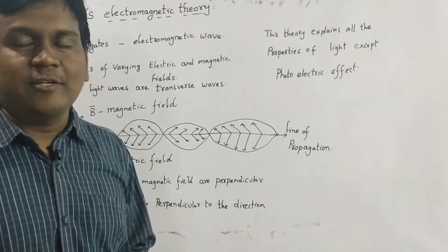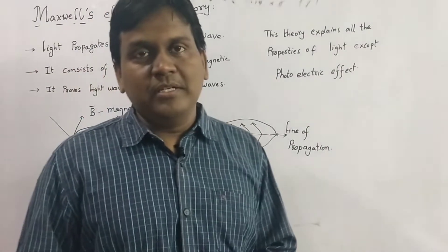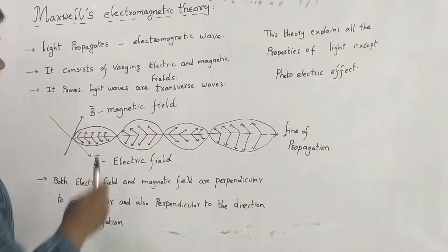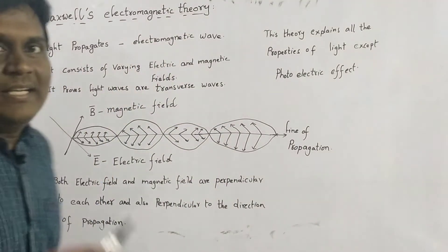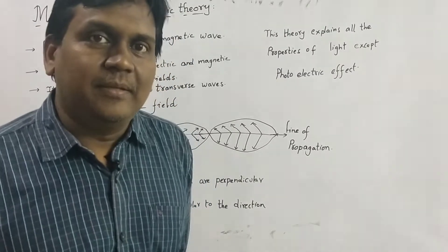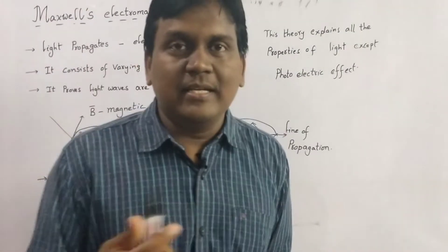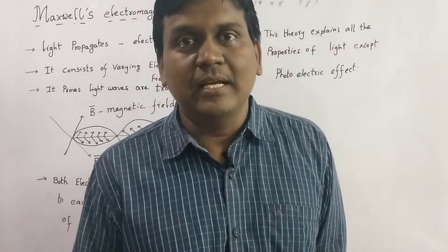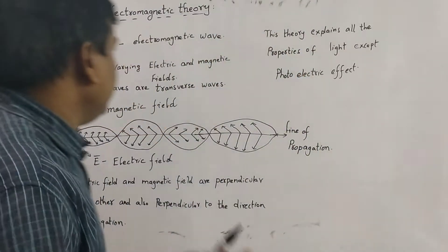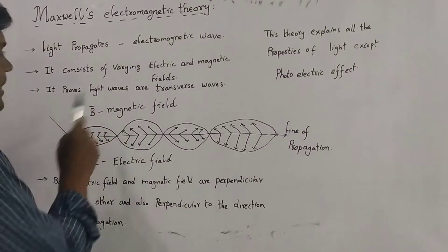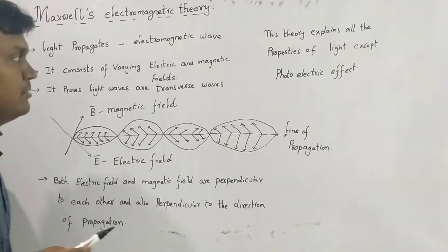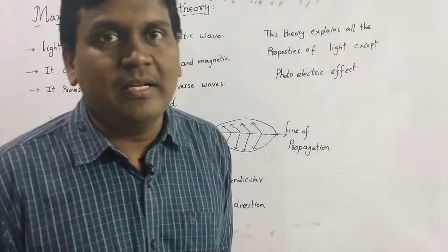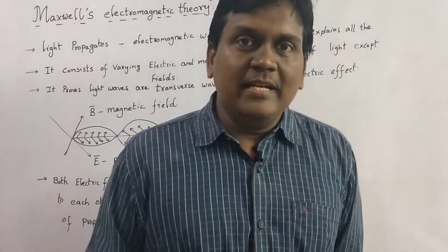According to this theory, light propagates in the form of an electromagnetic wave. It consists of varying electric and magnetic fields. This electromagnetic wave theory of Maxwell proves that light waves are transverse waves.